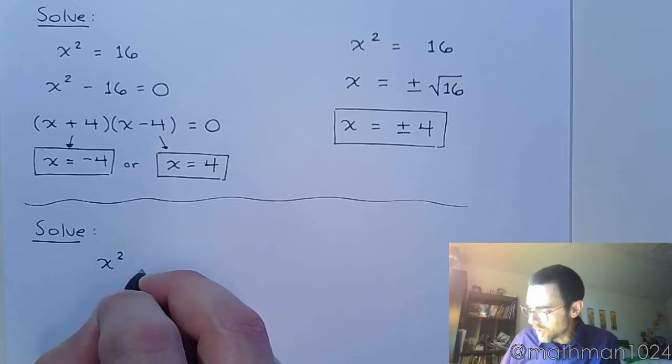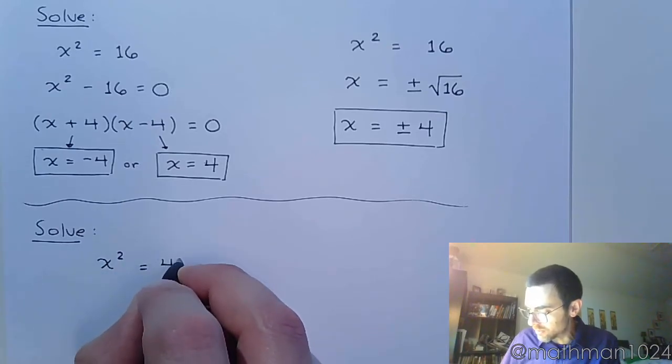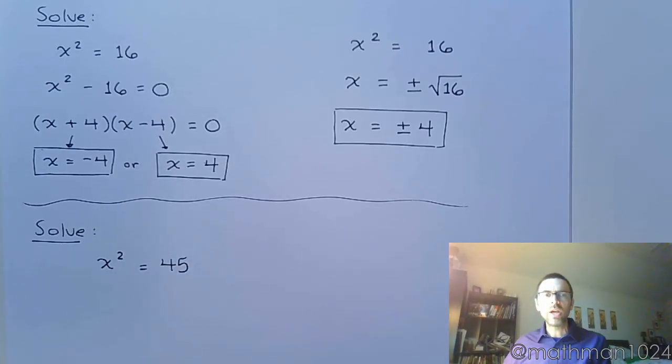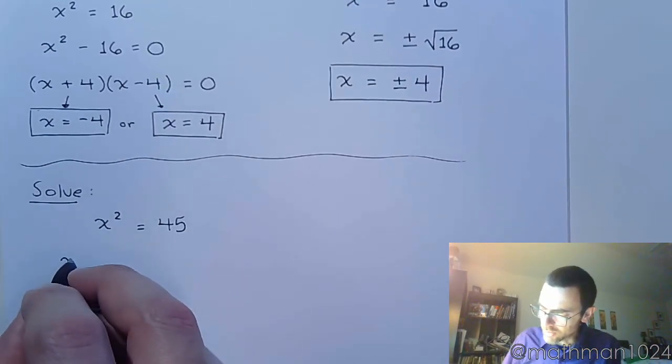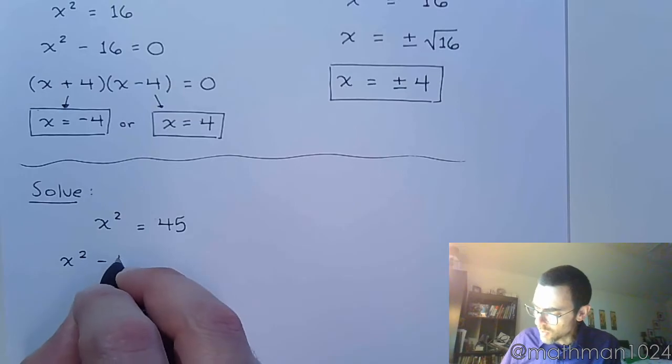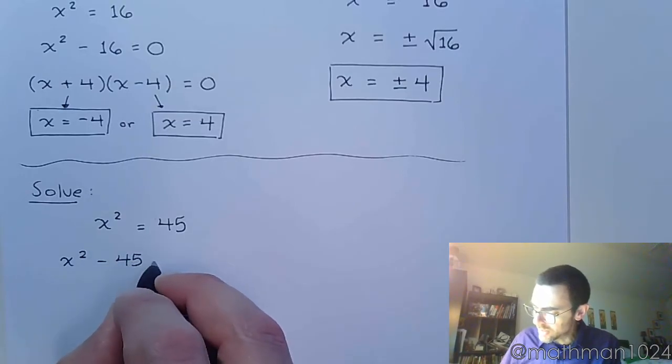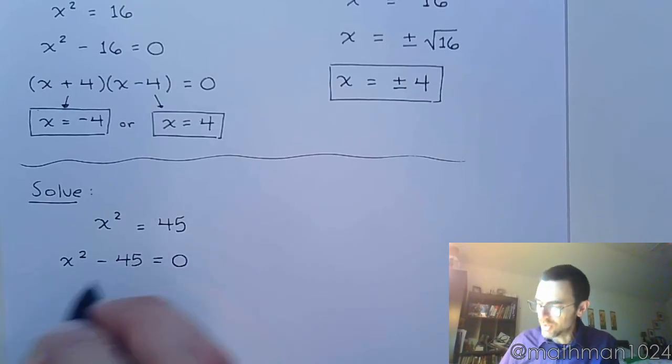Let's examine x squared is equal to 45. Now, if we try to use the zero factor theorem, that means we have to move the 45 to the other side. So we'd have x squared minus 45 is equal to zero.